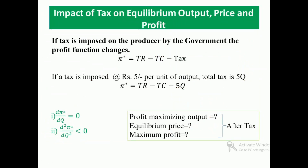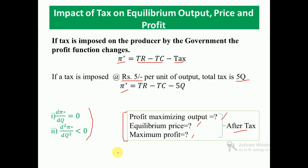Now let us look at the impact of tax on equilibrium output, price, and profit. If tax is imposed on the producer by the government, the profit function changes to pi star equal to TR minus TC minus tax. If a tax is imposed at the rate of rupees 5 per unit of output, the total tax is 5q, so the new profit function is TR minus TC minus 5q. Applying the first and second order conditions gives the profit maximizing output, equilibrium price, and maximum profit after tax, which are then compared to values without tax.